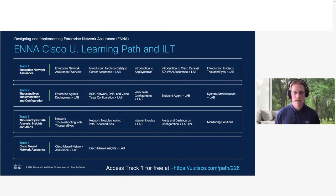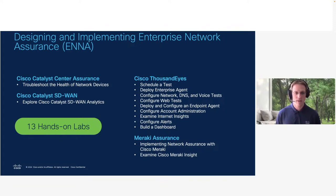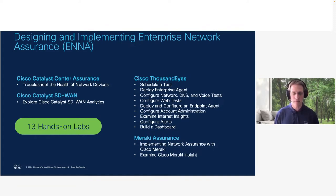The learning path includes videos, text content to read through, and labs. You can access the first track for free at the URL listed on this slide. For ILT — instructor-led training — it's the same content, just with an instructor presenting the material. It's a four-day instructor-led training. Within the training there are 13 hands-on labs covering all the platforms: Cisco Catalyst Center Assurance, Cisco Catalyst SD-WAN, nine labs with Cisco ThousandEyes, and a couple labs with Meraki Assurance.